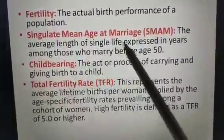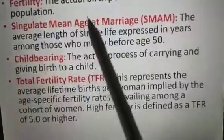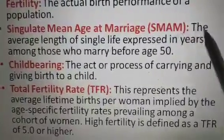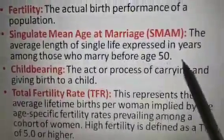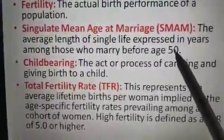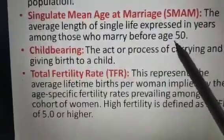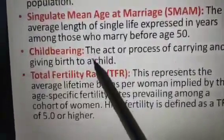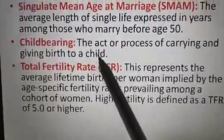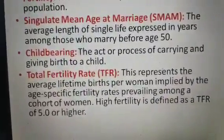The term Fertility means the actual birth performance of a population, which I will cover in the next class. There is one more term called Singulate Mean Age at Marriage (SMAM), which means the average length of single life expressed in years among those who married before age 50. When we measure the average age at marriage, that is the SMAM. Then comes the period of childbearing — the act or process of caring for and giving birth to a child, which is very much related to fertility.